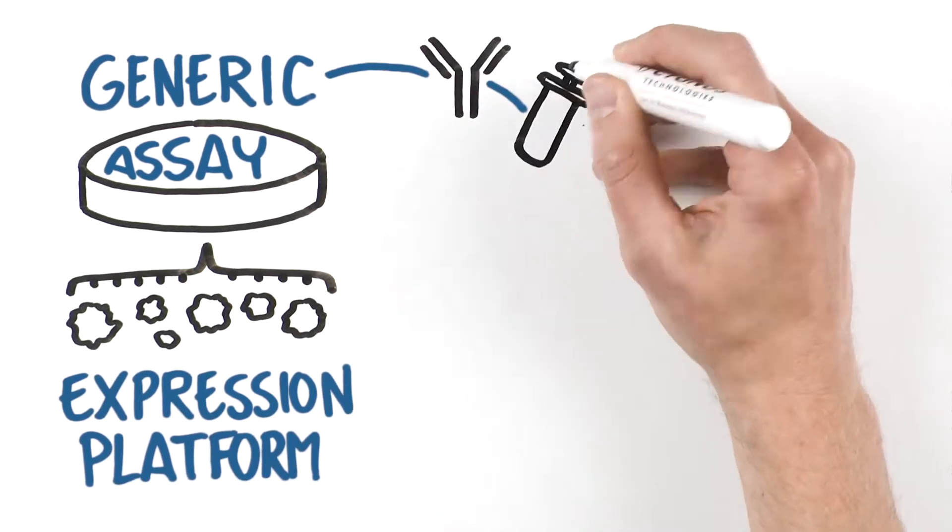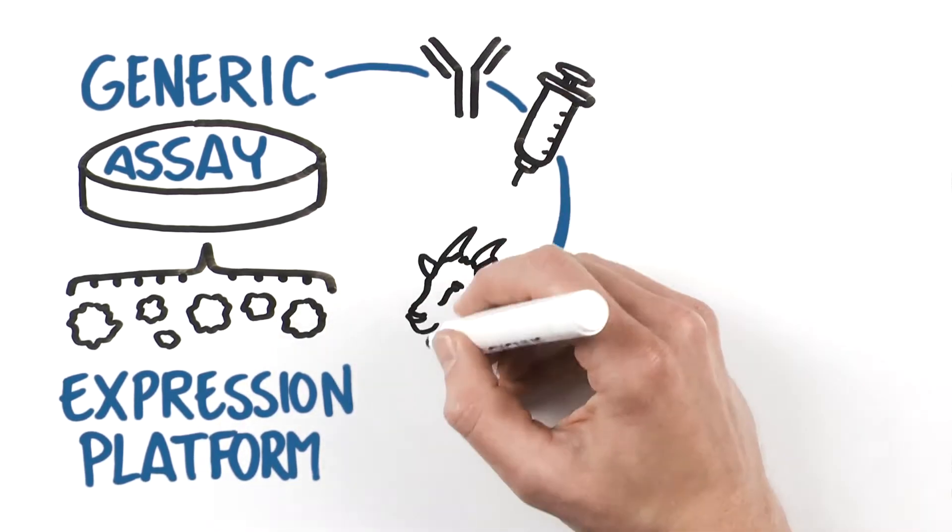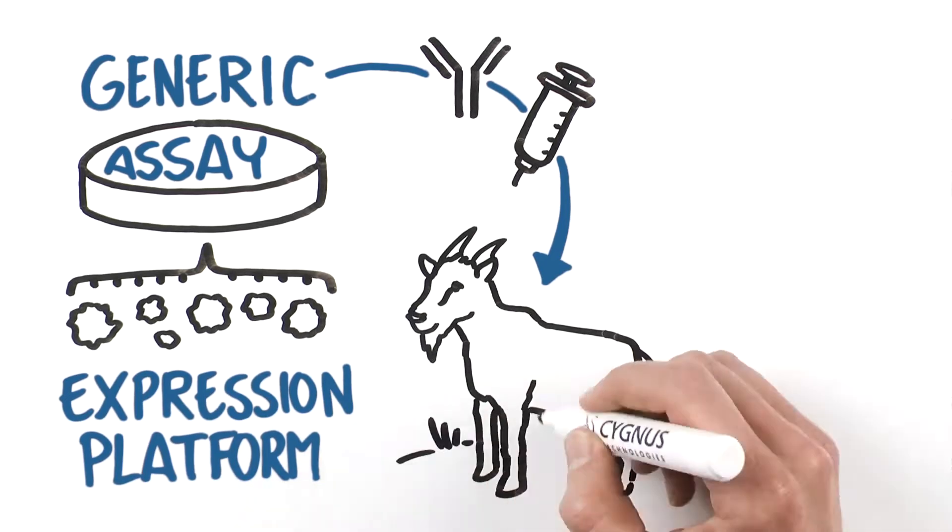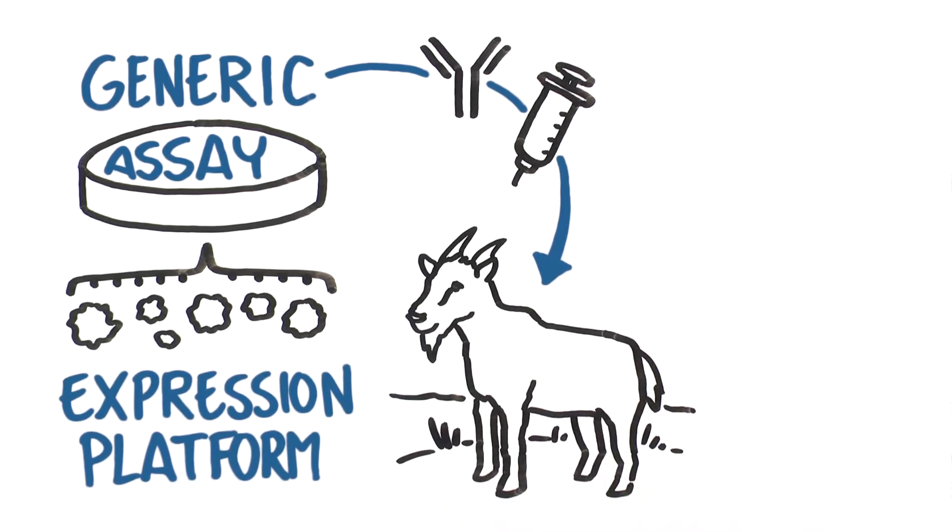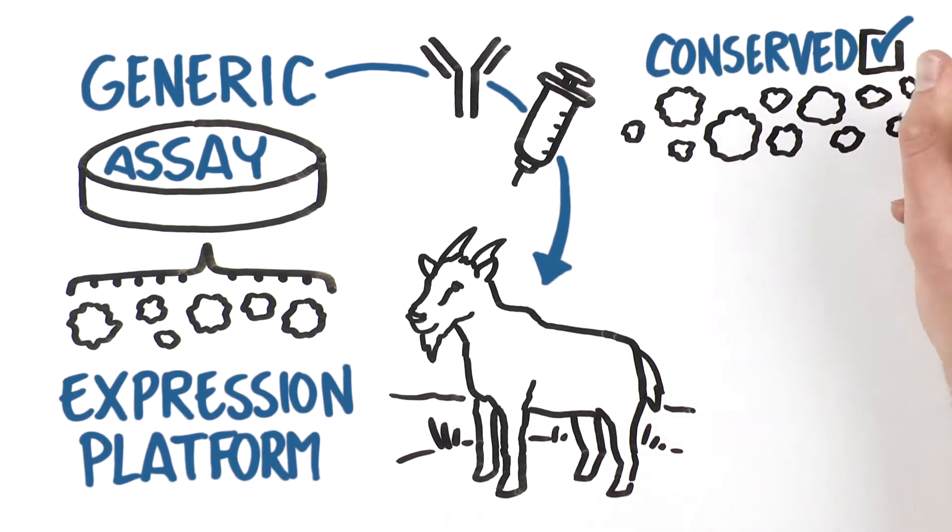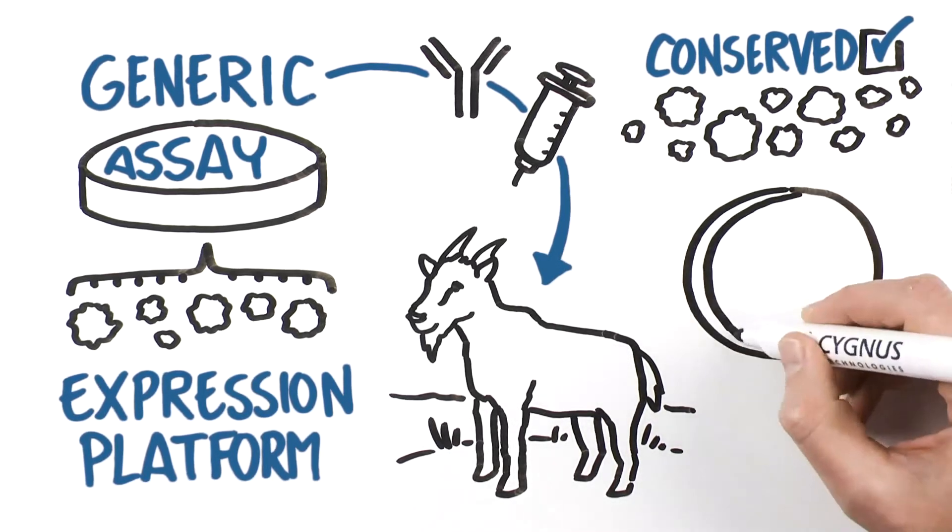Generic assays use an antigen derived from cells of a representative strain of the species for animal immunizations. They assume a large majority of proteins will be conserved across strains of the same species, and the final antibody developed is intended to detect HCPs independent of the growth and purification processes.